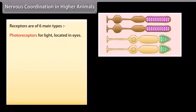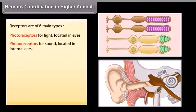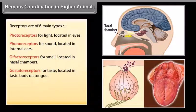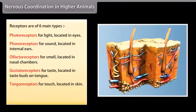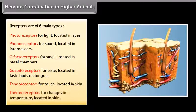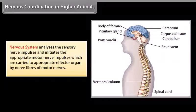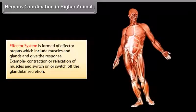Photoreceptors for light, located in eyes. Phonoreceptors for sound, located in internal ears. Olfactory receptors for smell, located in nasal chambers. Gustatory receptors for taste, located in taste buds on the tongue. Tangoreceptors for touch, located in skin. Thermoreceptors for changes in temperature, located in skin. The nervous system analyzes sensory nerve impulses and initiates appropriate motor nerve impulses, which are carried to the appropriate effector organ by nerve fibers of motor nerves. The effector system is formed of effector organs, which include muscles and glands, and give the response — example, contraction or relaxation of muscles and switching on or off of glandular secretion.